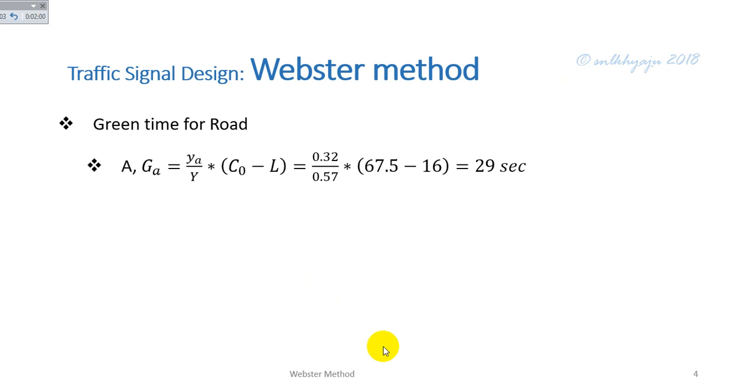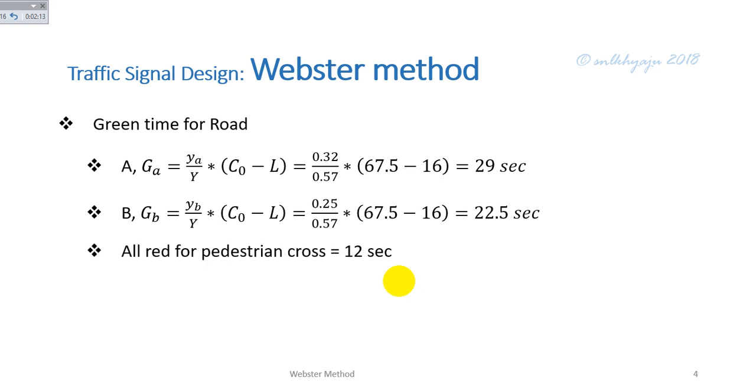Then green time for road A is calculated from the relation as 19 seconds, and green time for road B is calculated as 22.5 seconds. All red for pedestrian crossing equals 12 seconds.